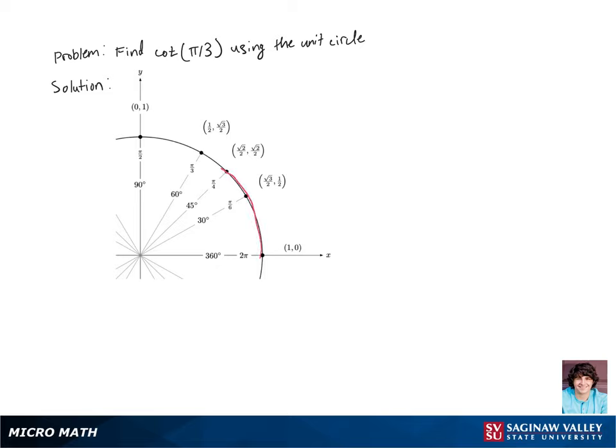Let's find cotangent of π/3 using the unit circle. First, we'll travel a distance of π/3 along our unit circle, and cotangent is just cosine over sine.